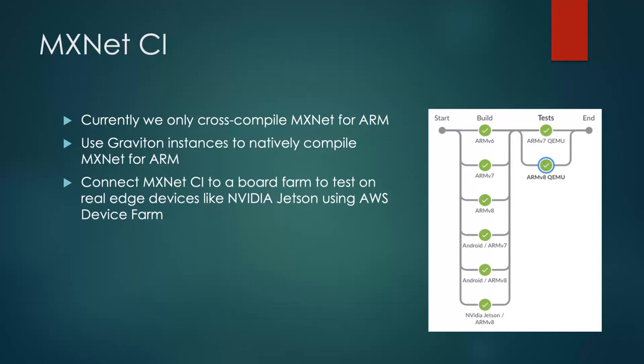Currently in MXNet CI, we build MXNet for different ARM architectures on Linux and Android operating systems, but all these builds use cross-compilation toolchain. We can replace them with native compilation toolchains and use Graviton instances to save cost. Also currently, we only have QEMU-based ARM testing in CI. We can use AWS Device Farm to connect MXNet CI to a board farm to test on a real edge device like NVIDIA Jetson.